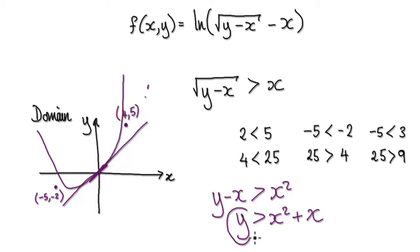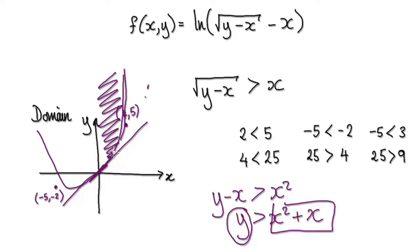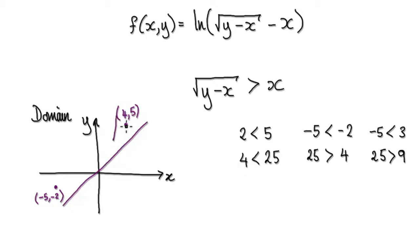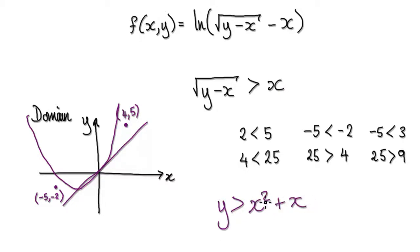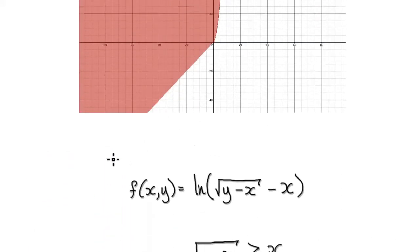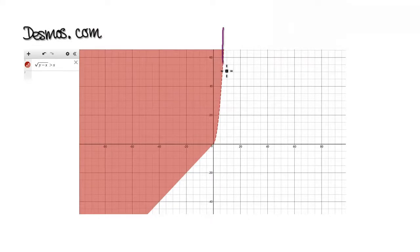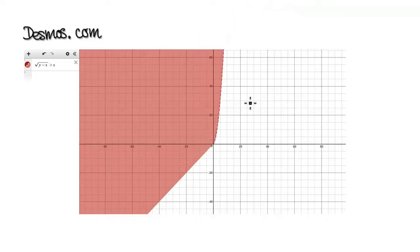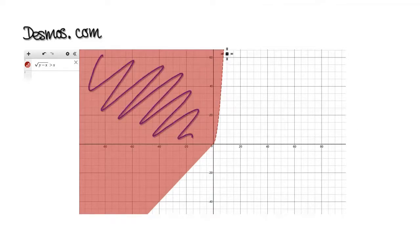We need the region where y is bigger than our quadratic. The quadratic we're talking about is y strictly greater than x² + x. Going back to our Desmos cheat, you can see there is a quadratic boundary there. So our domain is really everything in the second and third quadrants above the y equals x line, plus the region above the quadratic y = x² + x for the part where x is positive.